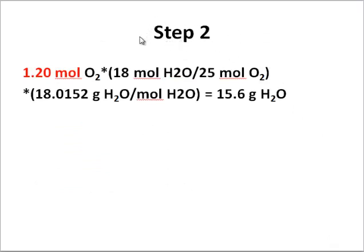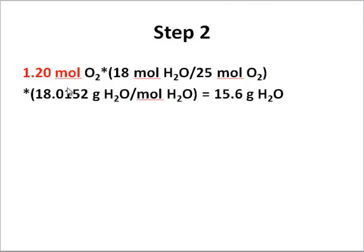We could take that into step two of the stoichiometry problem. 1.20 moles of O2 could be converted using numbers from the balanced chemical equation into moles of the thing we want to know about. Moles of oxygen to moles of water in this step. Moles of oxygen cancel. And then we can convert from moles to grams for water in one last calculation and get 15.6 grams of H2O. So I suppose I should actually call this steps two and three.